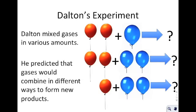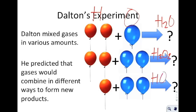The first thing we do is start with the idea of the atom. The atom was first theorized in ancient Greece, but at that point it was just a philosophical idea. Dalton — John Dalton — was the first one to provide experimental evidence that perhaps there could be an atom. He did this by mixing various amounts of gas. We have balloons representing hydrogen gas and oxygen gas, and he predicted that the gases would combine in different ways to form new products — H₂O, then H₂O₂, and then HO₂ — by mixing very carefully produced amounts of gas.